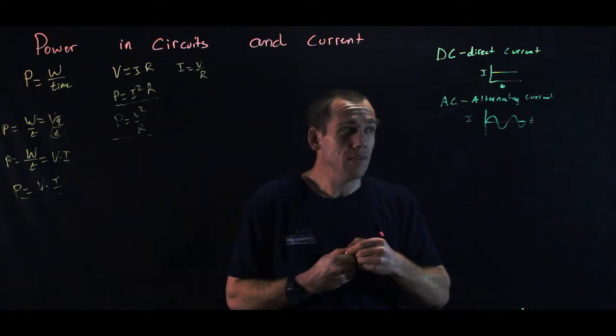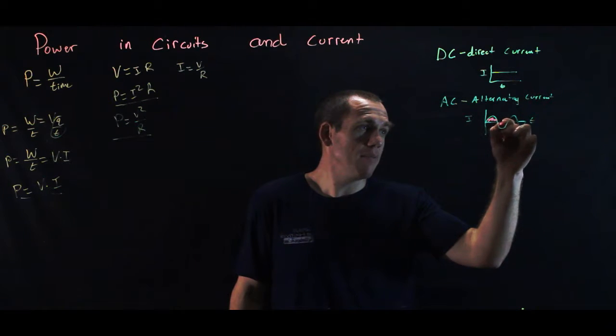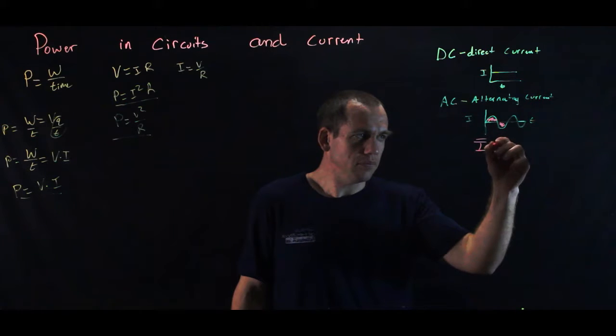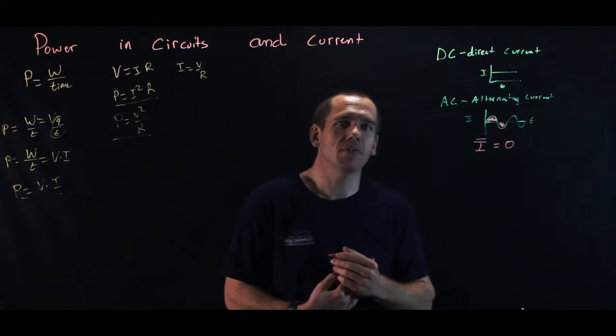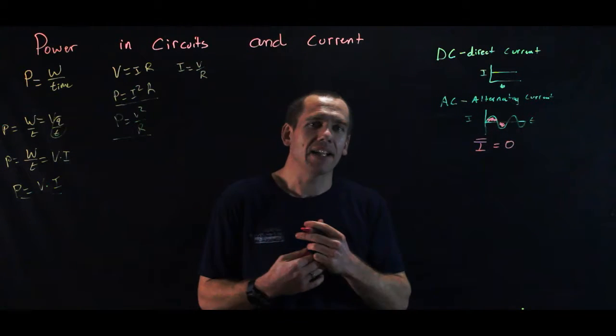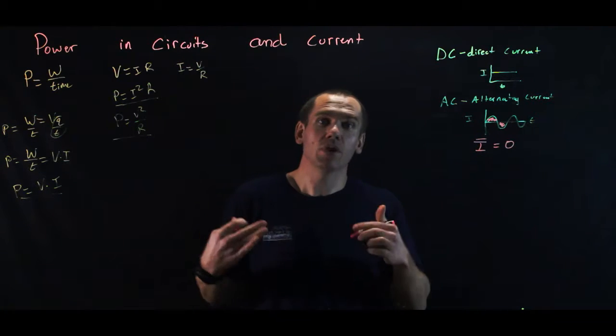So that alternating current, if you think about it, if it flows for equal time in one direction than the other, then that means the average current is equal to zero. Well, if the average current is equal to zero, does that mean that it doesn't require any work to actually get, or any power to get energy out of those? Not even a little bit.